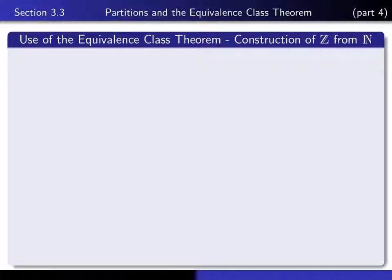This is part 4 in our series of lectures on section 3.3, and in this lecture we're going to give an application of the equivalence class theorem. Namely, we're going to show how to construct the integers from the set of natural numbers. So if we view the natural numbers as being a fundamental object of mathematics that's given to us, how can we use it to construct more complicated objects such as the set of integers?